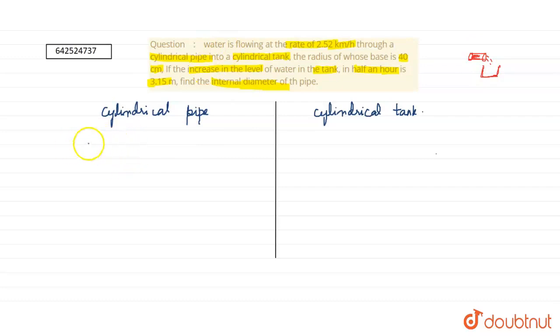In the cylindrical pipe, the rate equals 2.52 kilometers per hour. For the cylindrical tank, the radius is 40 centimeters, and the height of water rising in the tank is 3.15 meters.